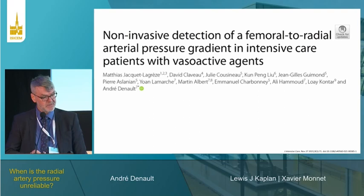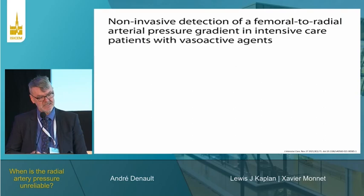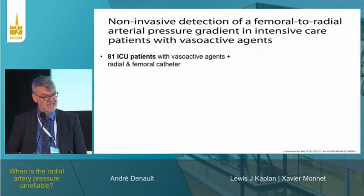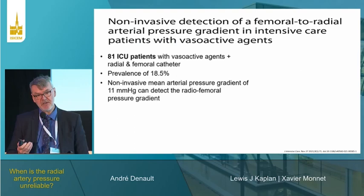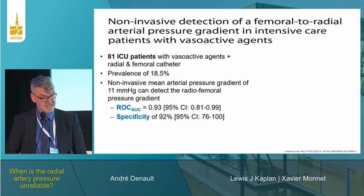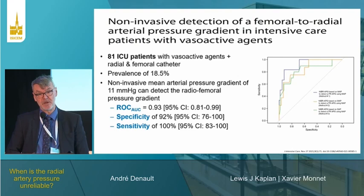This is a study by Dr. Mathias Jacquet-Lacroise, one of my co-presenters. He looked at ICU patients — not only cardiac patients. When patients arrived in the ICU on vasoactive drugs, we measured the radial and femoral gradient. Among 81 patients with both measurements, the gradient was present in 18.5%. If there is a mean arterial pressure difference of more than 11 mmHg between the radial and your non-invasive pressure cuff, you had a very high ROC curve — specificity of 92% and sensitivity of nearly 100% — to detect a significant radial-to-femoral pressure gradient.